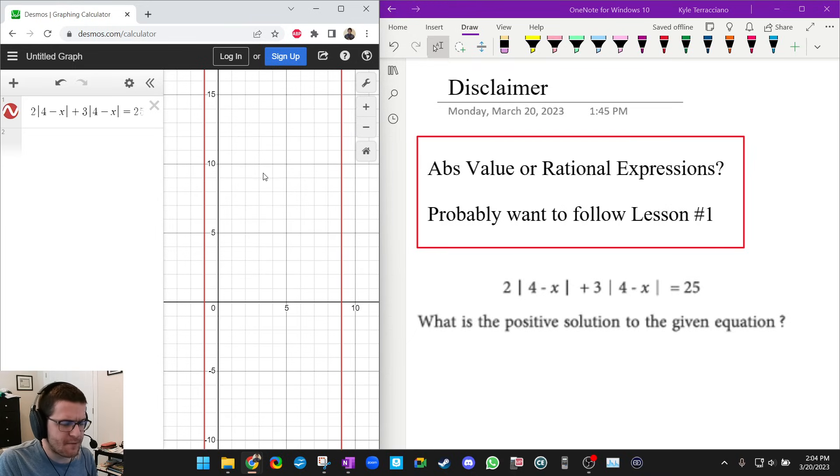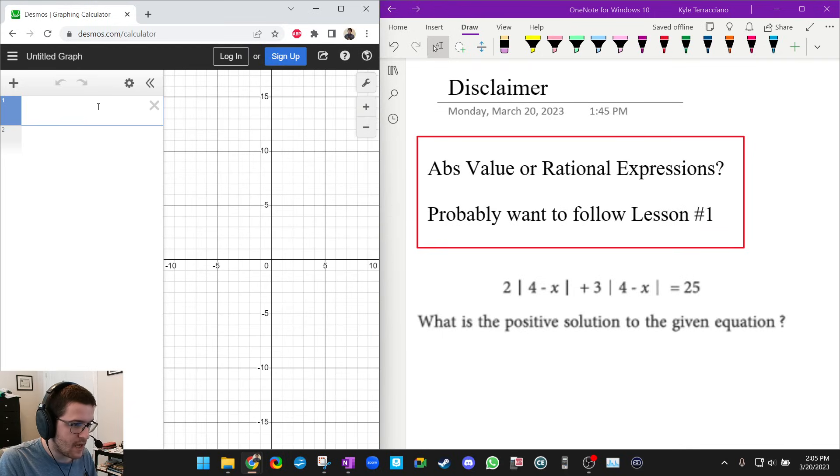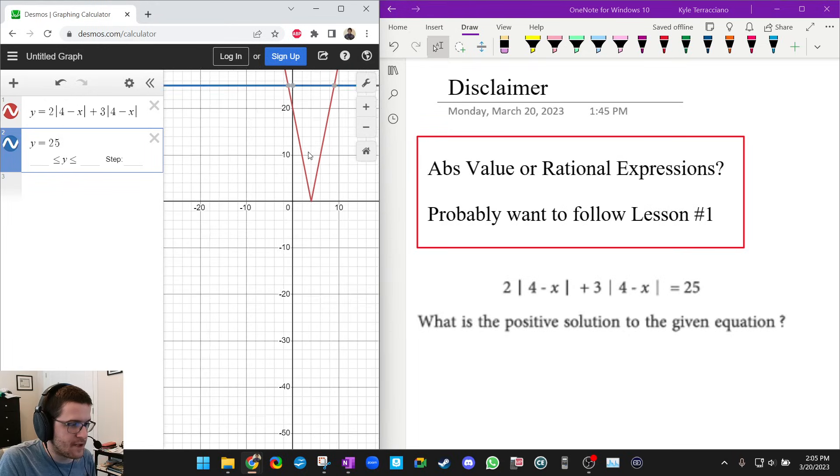Plus, it doesn't give me any conceptual understanding of what's happening. So I'm actually going to go back and solve this one using the method that we learned in lesson number one. So go watch that video if you haven't already. So I'm going to do y equals the left-hand side of the equation: 2|4 - x| + 3|4 - x|. And I'm going to do y equals the right-hand side of the equation: 25.